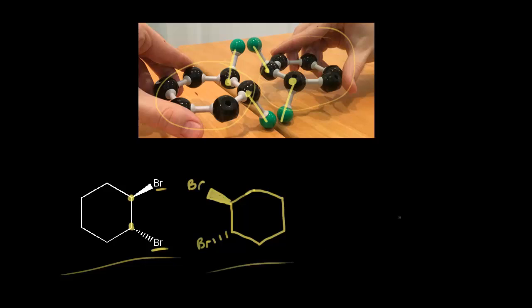Sometimes you don't have model sets or a mirror, but you can draw the mirror image just using the original drawing by imagining a mirror. This bromine is reflected in the mirror, this bromine is reflected in the mirror — these two bromines are reflecting each other. And then this carbon is opposite of this carbon, and this carbon is opposite of that one. So just a few tricks to help you draw the mirror image.